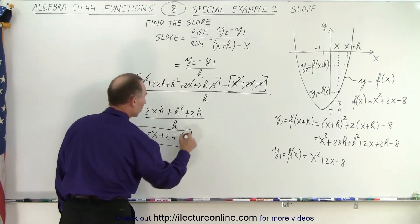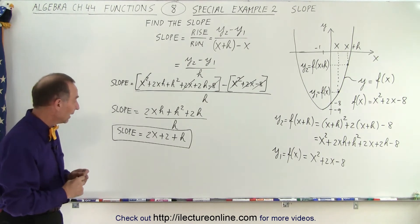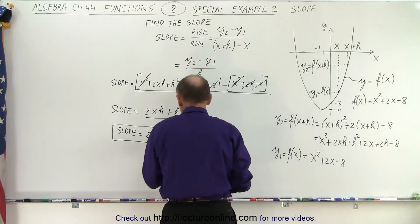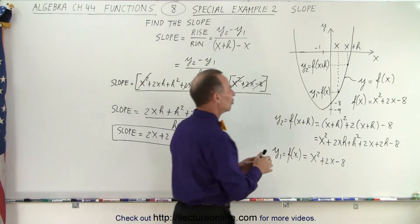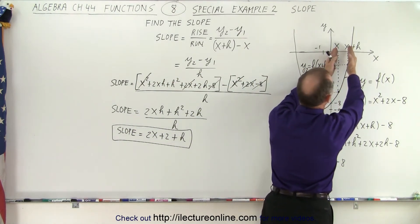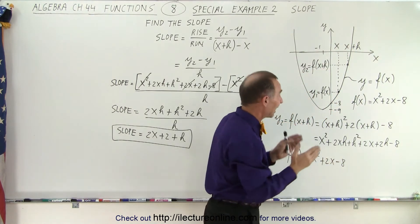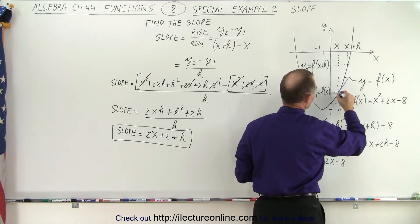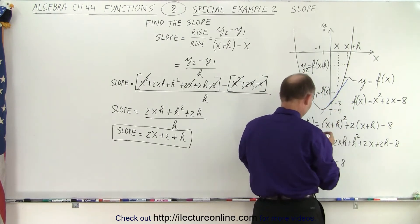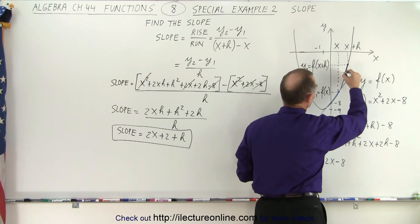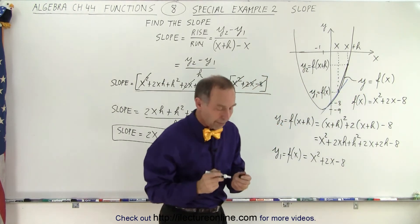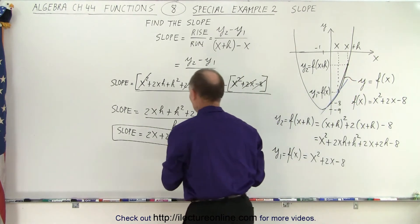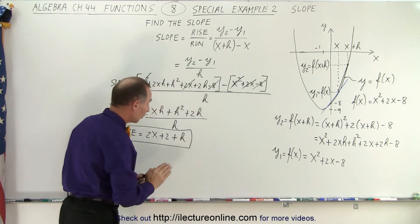So here is the slope of that particular quadratic equation anywhere along the curve. Remember that x can be any value and h can be any value. Now h is simply determined by how far apart the two points are. In order to get a more accurate value — here's the tangent line to that point, and here is the slope between the two points — you can see clearly that those slopes are not the same. But what happens when we bring the second point closer and closer to the first point, when h gets smaller and smaller?